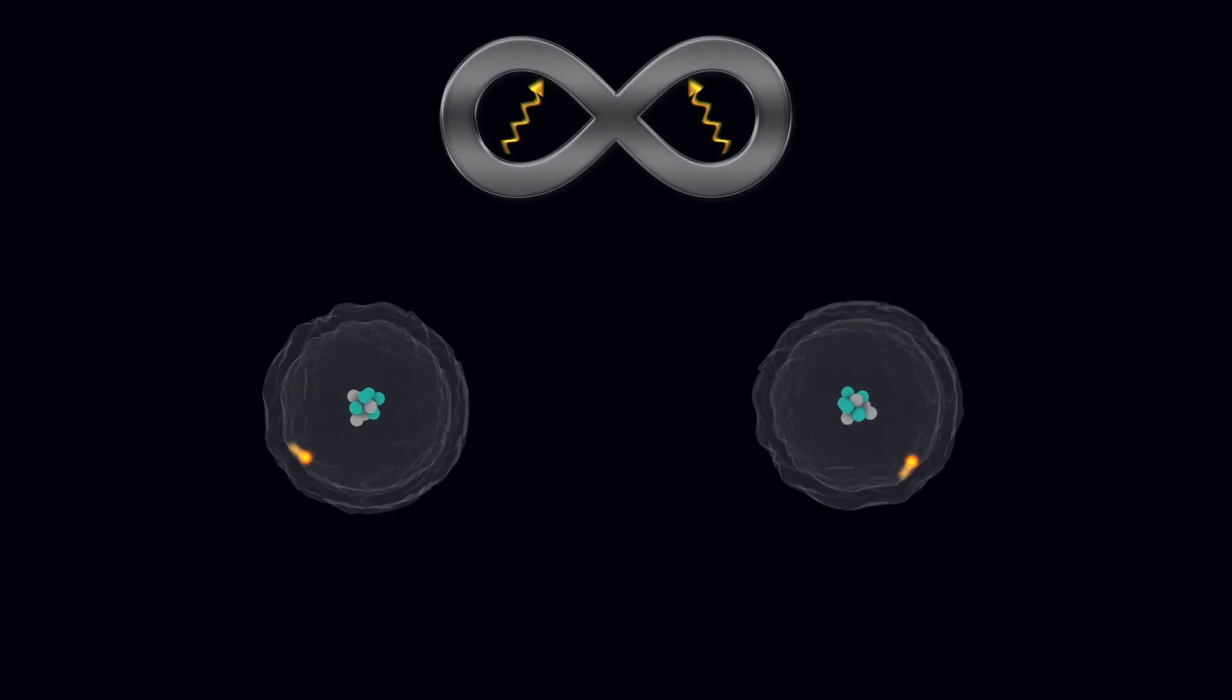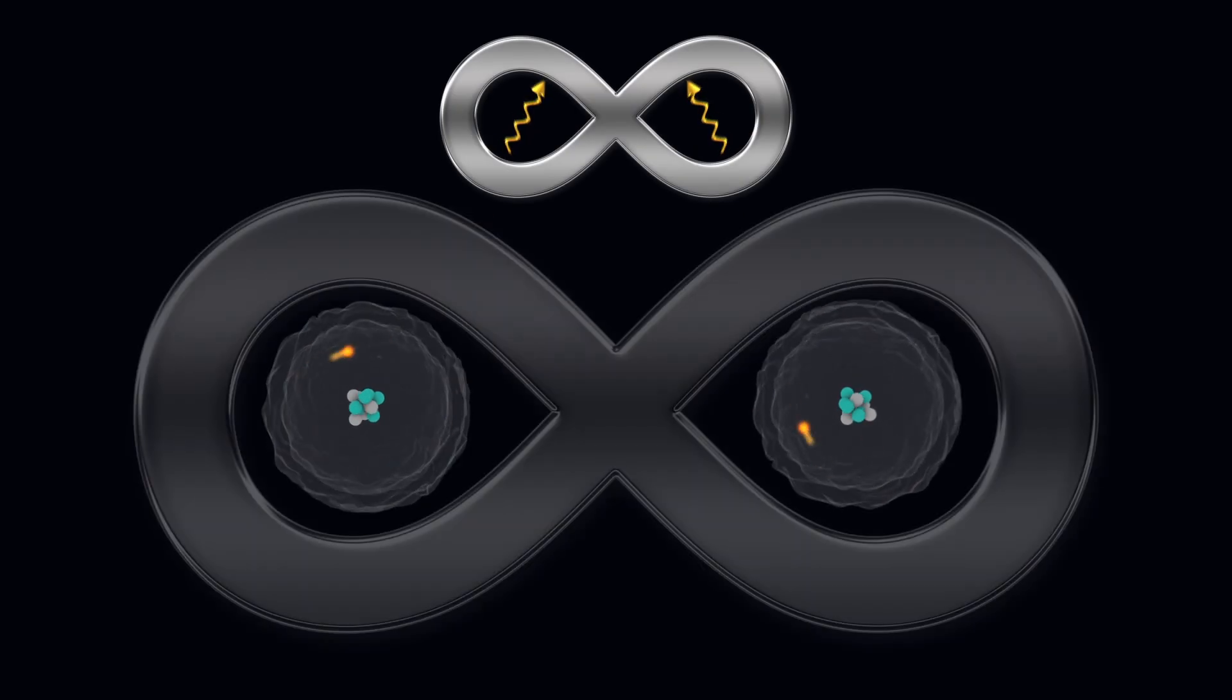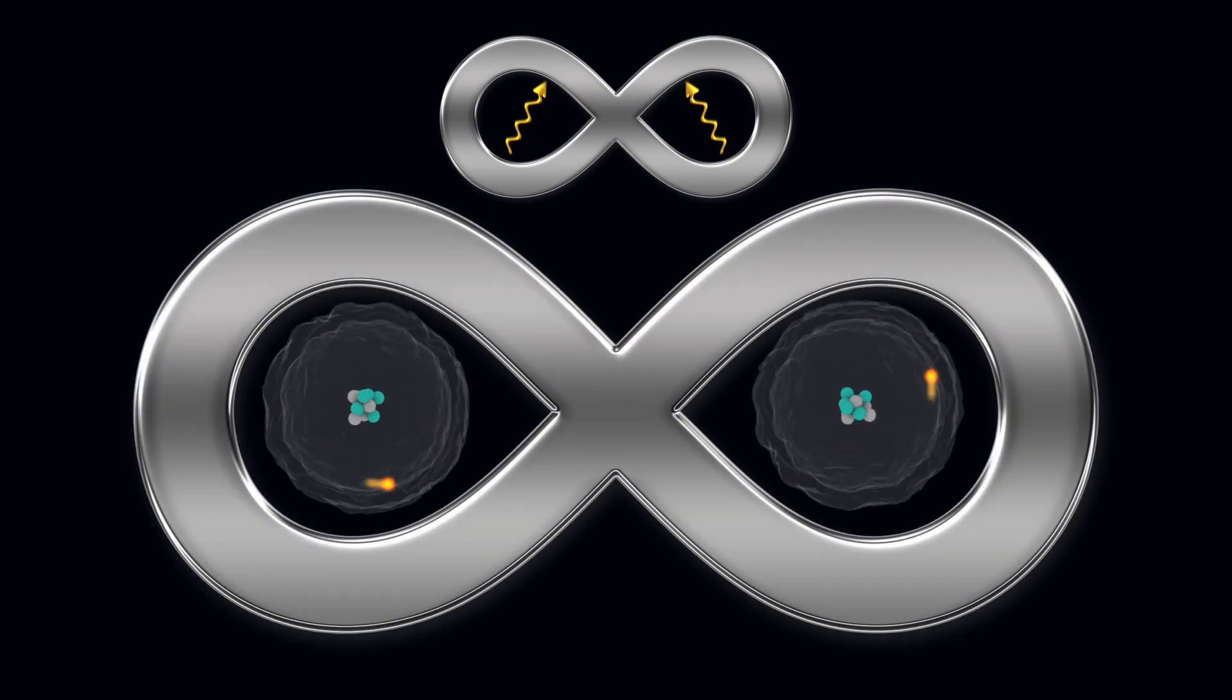If the atoms happen to emit two photons that have opposite polarizations and we mix up the photons so that we don't know which came from which atom, then the photons will become entangled, which forces the atoms they come from to become entangled too.